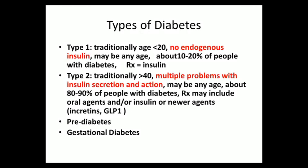Type 1 diabetes classically occurs in people under 20, who are usually thin, but you can be any age. The pancreas stops producing insulin — about 5 to 10% of people have type 1. Type 2 diabetes is far more common — classically in people over 40 who are overweight, but we're seeing it in children as well with the obesity epidemic. About 80 to 90% of people have type 2. There's also prediabetes and gestational diabetes.